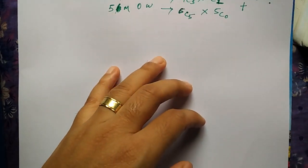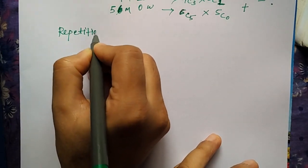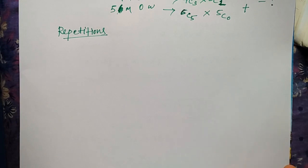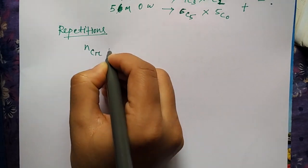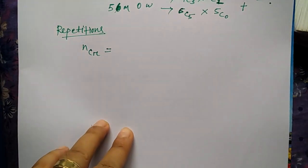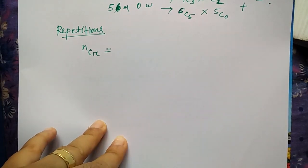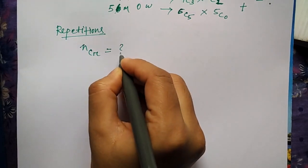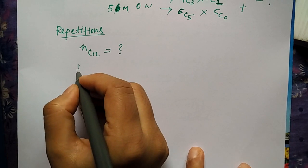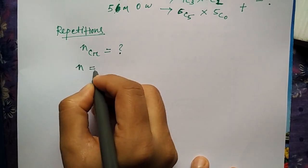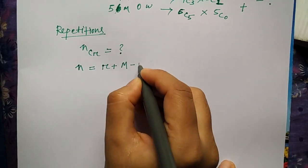Then I will see that combination with repetition. In the case of combination with repetition, there is a formula. nCr equals... so here the n and r value will be different. Sometimes using the same r, you can find out the n value. So what is n value? It will be r plus m minus one.